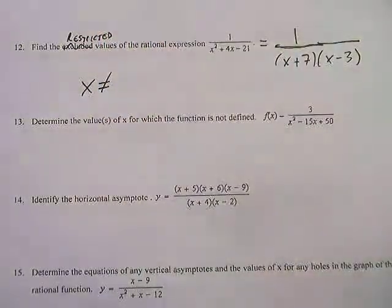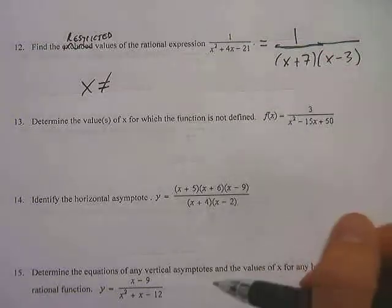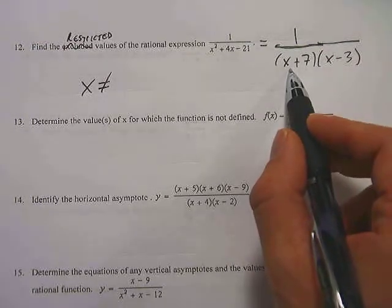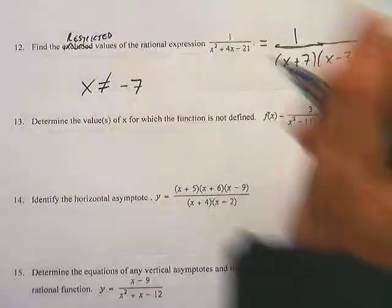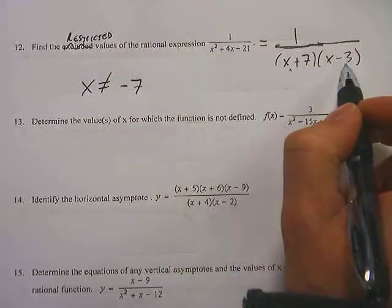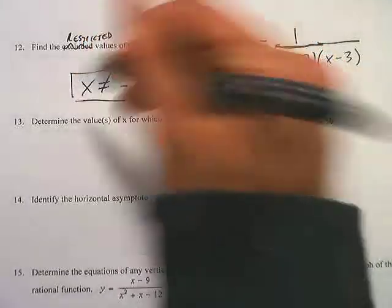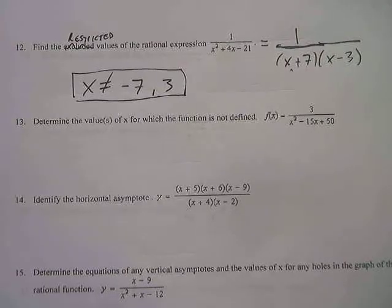That happens in two places. So what we usually say is that x cannot equal the two things that would set this denominator equal to 0. Here, x would have to be negative 7 to turn that into a 0, and here it would have to be positive 3. Those are the two restricted or excluded values: negative 7 and 3.